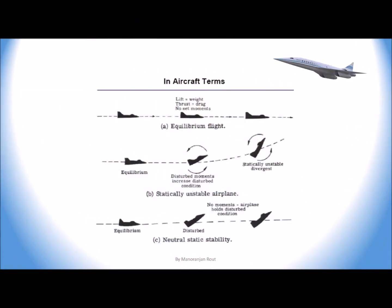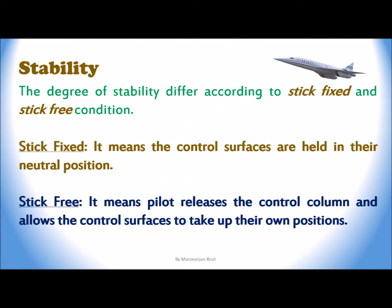In the first image at the top, A is the equilibrium flight where lift is equal and opposite to weight and thrust is equal and opposite to drag. The second image B shows how a statically unstable aircraft increases the disturbed condition due to disturbed moments, which is also termed as statically unstable divergent. Image C shows how neutral stability holds its original state in the direction of disturbance. The degree of stability differs according to stick-fixed condition, meaning control surfaces are held in their neutral position, and stick-free condition, meaning the pilot releases the control column and allows the control surfaces to take up their own positions.